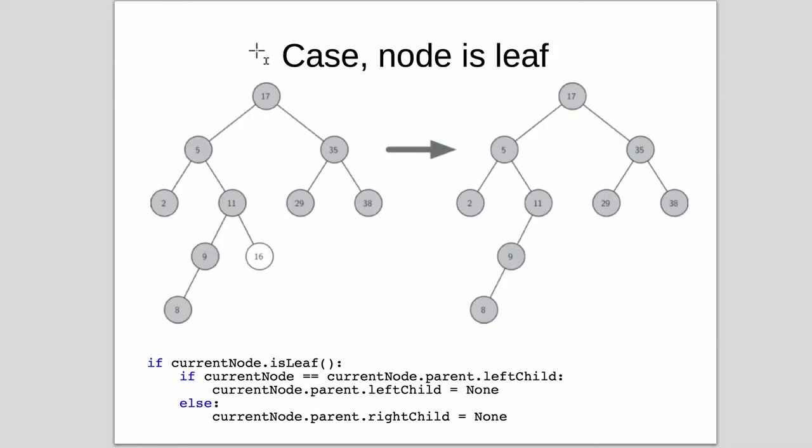Let's look at the simplest case if the node is a leaf. This shows you a tree here and we're going to delete this node in white here, node with the key 16. Because it has no children, all we have to do is remove it from the tree and it doesn't affect any other nodes. The only thing it's going to affect is this node will have a right child, so we have to set the right child of this node to none. Here's the resulting final tree after we delete it.